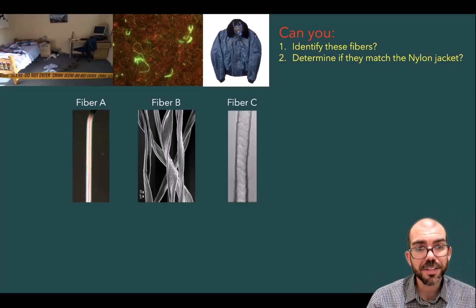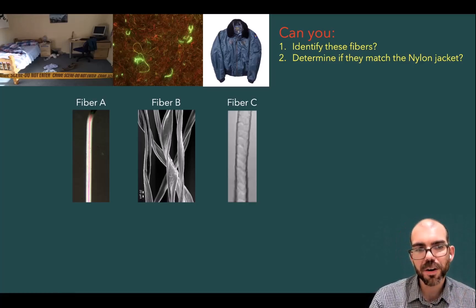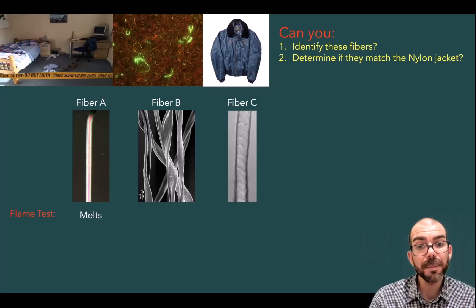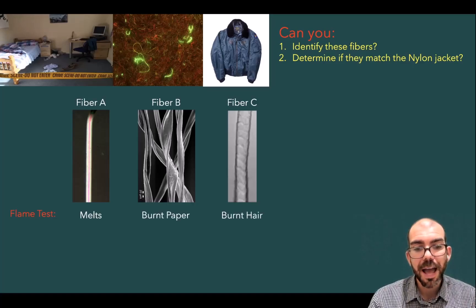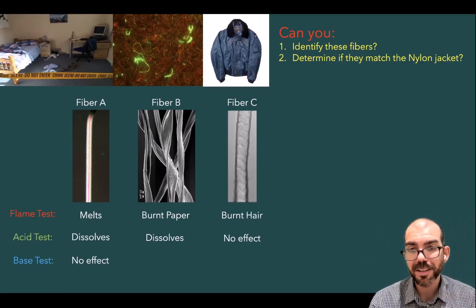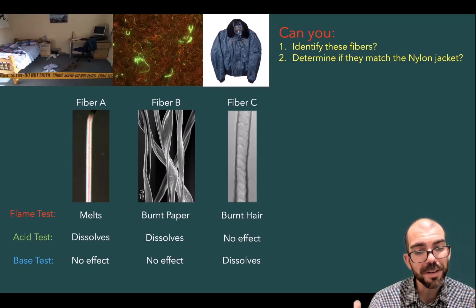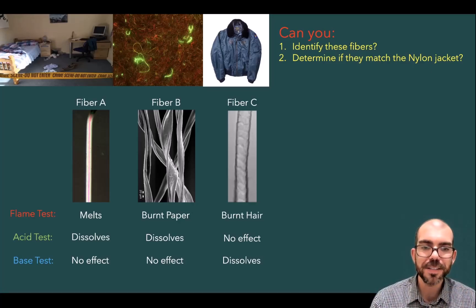I started this lesson asking you: could you identify the three fibers from the crime scene and determine if they match a nylon jacket? Let me test those fibers. On a flame test: fiber A melts, fiber B smells like burnt paper, and fiber C smells like burnt hair. With an acid test: fiber A dissolves, fiber B dissolves, and fiber C has no effect. With a base test: fiber A has no effect, fiber B has no effect, and fiber C dissolves. Can you identify these now and determine if they match a nylon jacket? I won't give it away in this video, but I hope you feel confident. Thank you, and I hope this helps you understand fiber evidence.